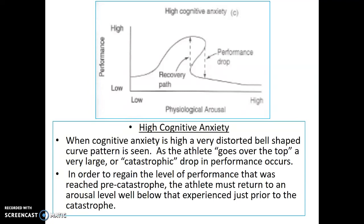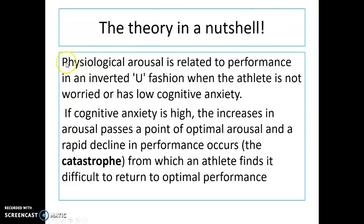So here is the theory in a nutshell. Physiological arousal is related to performance in an inverted U fashion when the athlete is not worried or has low cognitive anxiety. If cognitive anxiety is high, increases in arousal pass a point of optimal arousal and a rapid decline in performance occurs — the catastrophe — from which an athlete finds it difficult to return to optimal performance.